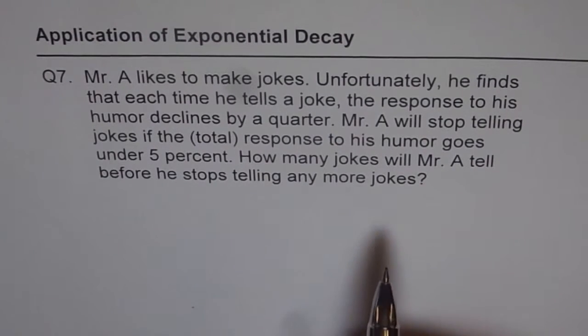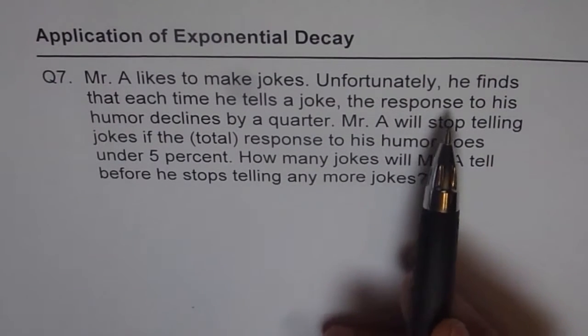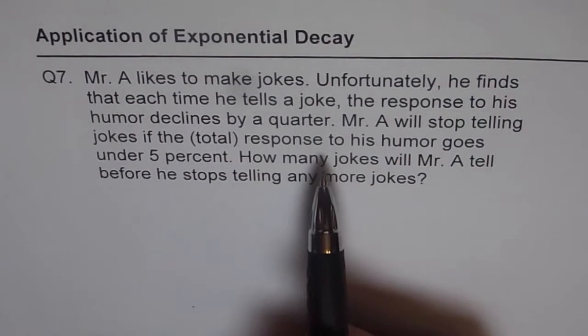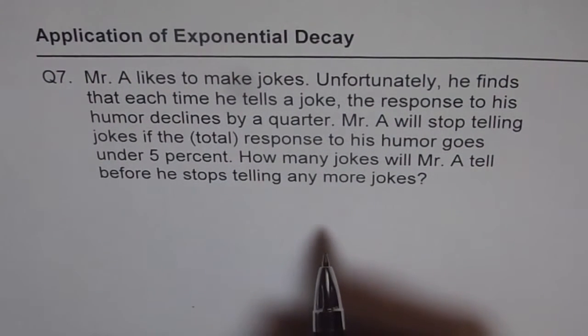Well, as you can see here that every time Mr. A tells a joke, the response goes down by a quarter. That means that the rate at which the response is going down or declining or decaying is 0.25.